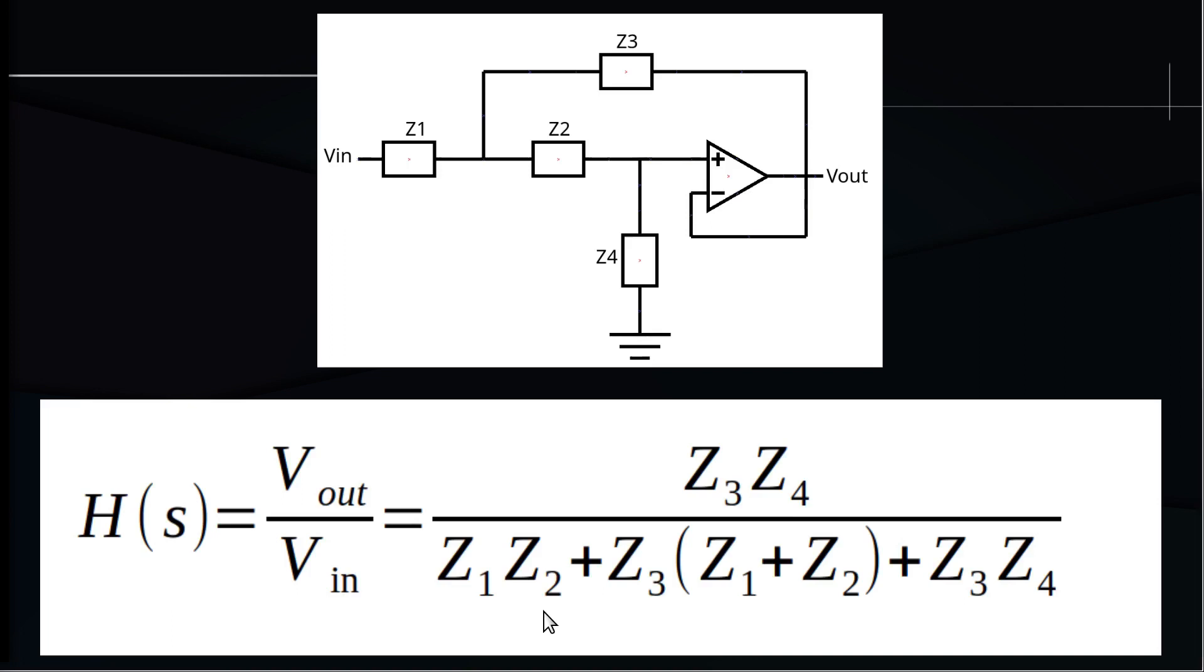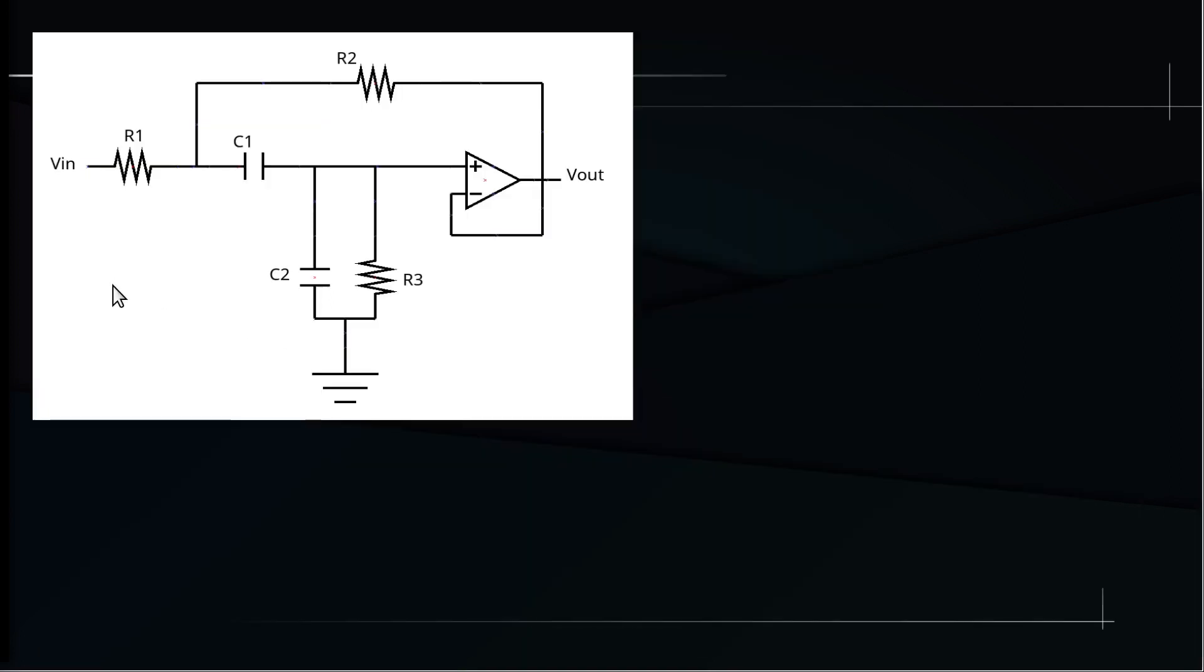To obtain instead a band-pass filter, we have to define the four impedances as follows. Z1 is replaced with a resistor R1, Z2 is replaced with a capacitor C1, Z3 is replaced with another resistor R2, and finally we replace Z4 with the parallel of a resistor R3 and a capacitor C2. Following the same procedure we have seen for the low-pass and high-pass filter, we can replace the values of the impedances of these components in the generalized transfer function, make some adjustments and obtain this final formula for the transfer function.